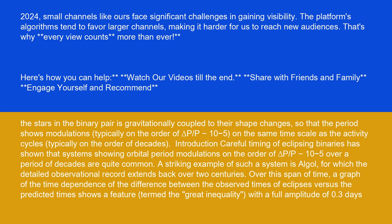Introduction: Careful timing of eclipsing binaries has shown that systems showing orbital period modulations on the order of ΔP/P ~ 10^-5 over a period of decades are quite common. A striking example of such a system is Algol, for which the detailed observational record extends back over two centuries. Over this span of time,